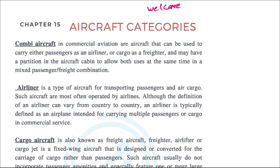Hello guys, welcome to today's video. Today we'll be discussing Chapter 15 of the book. In this chapter, we'll be discussing the categories of aircraft. There are many types of aircraft, and we'll start with the combi aircraft.